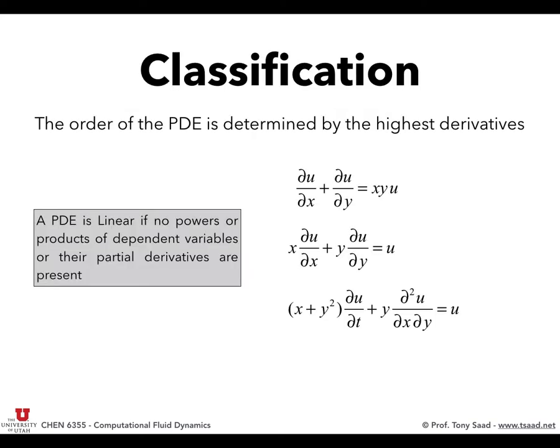The order of a PDE is determined by the highest derivative — first, second, third order. A linear PDE has coefficients that multiply the derivatives without containing the dependent variable u or its derivatives. An equation with y² in the coefficient is still linear because y² doesn't contain u. If we had u² in the coefficient, that becomes nonlinear. If the coefficients are just functions of the independent variable, those are linear equations.